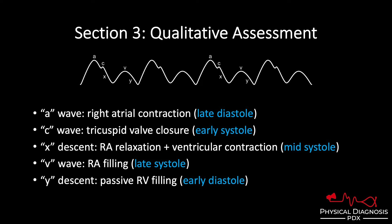Now we're done with systole and back in early diastole. In early diastole, the tricuspid valve springs open, and you have passive ventricular filling from the right atrium. As the right atrium loses that volume of blood, pressure will also go down, and that's going to create the Y descent. It is critical to have an intimate understanding of the normal jugular venous waveform and the cardiac events that cause each component of the waveform.